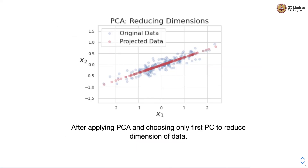If we want to reduce the number of features from 2 to 1, then the first principal component is our best bet, because it covers the maximum variance in the data. What you see here in red is the projection of the blue points onto the first principal component. You can see that it has covered maximum variance — even more than the original features x1 and x2 individually.